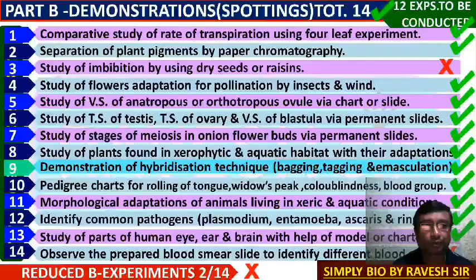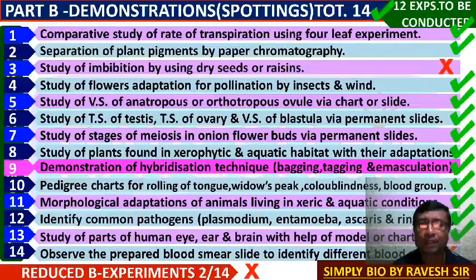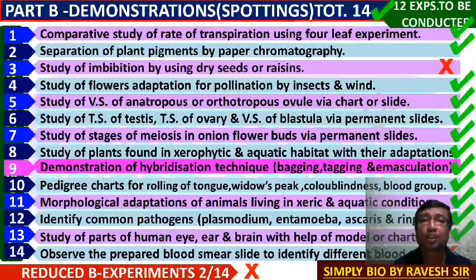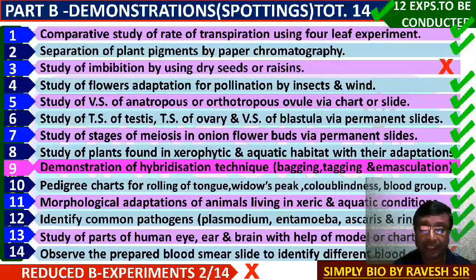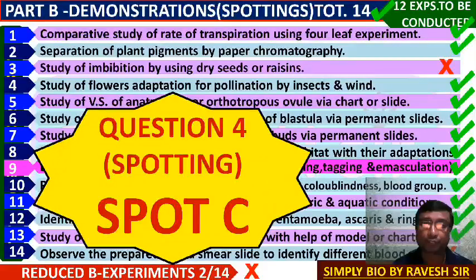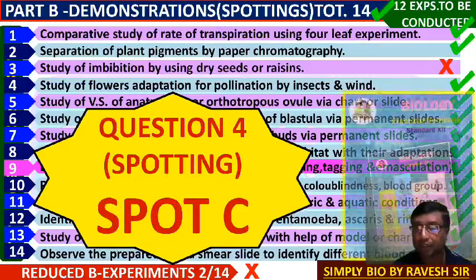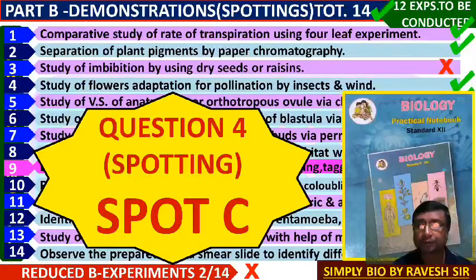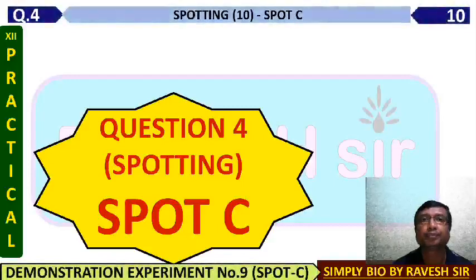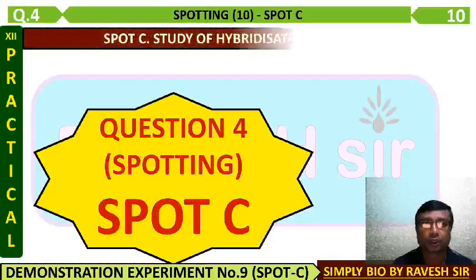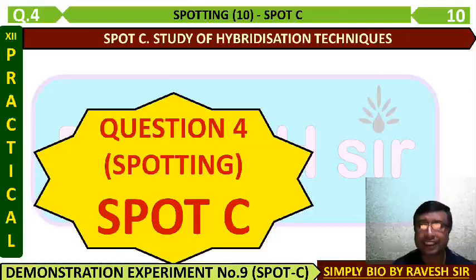The 9th experiment is the demonstration of hybridization technique — bagging, tagging, and emasculation — three important steps. Hybridization is an important technique in cross hybridization, plant breeding, and plant improvement. Spot C is the study of hybridization technique, so three techniques you have to study.